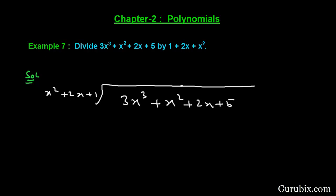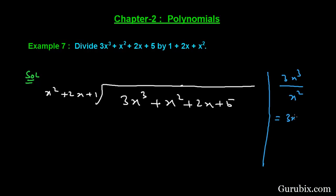To find the first term in the quotient, we divide the first term of the dividend — that is 3x³ — by the first term of the divisor, which is x². This gives us 3x. We write 3x in the quotient and multiply all the terms of the divisor by 3x.